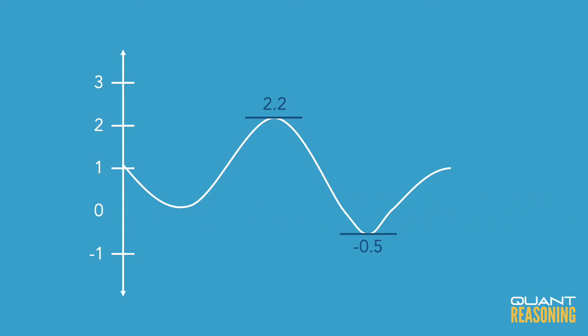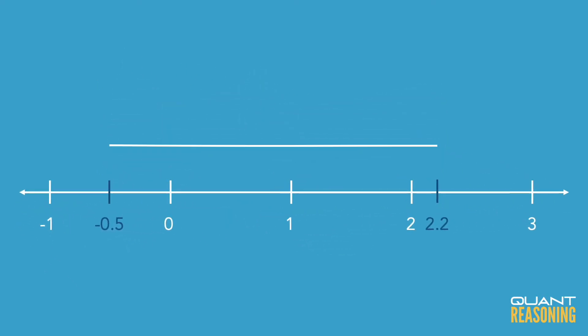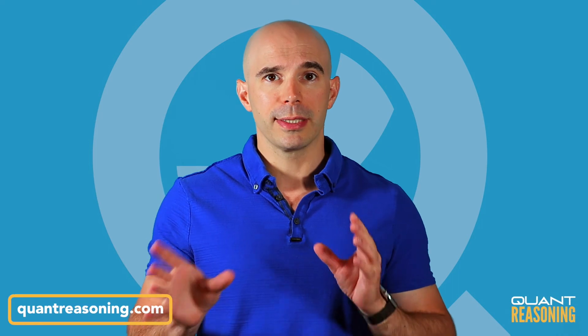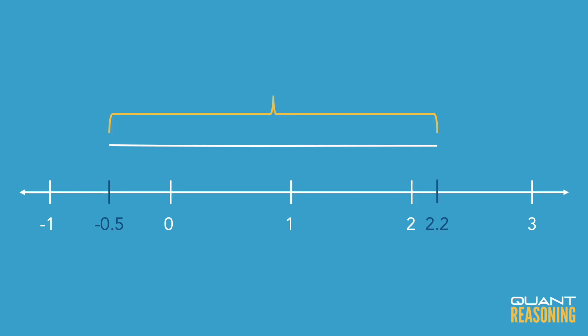It might help if we plot those on a number line and look at how far apart they are, maybe with zero as kind of an anchor point to help us see exactly how far we are. So negative 0.5 is one half of a unit to the left of zero, and 2.2 is 2.2 units to the right of zero.